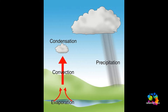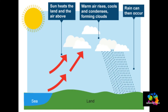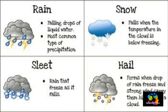Let us start with precipitation. What is precipitation? As water vapor gathers and condenses in the clouds, the drops become too heavy to stay in the air and gravity pulls the water drops down. This process is called precipitation. This precipitation could be of any form.